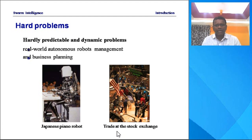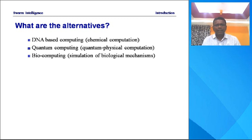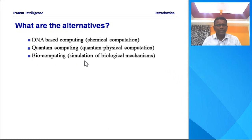Traditional systems cannot handle these hard problems easily and effectively. So we have some alternatives: DNA-based computing, quantum computing — which is widely used nowadays in every application — and bio-computing. Bio-computing is the simulation of biological mechanisms. Quantum computing is quantum physical computation, and DNA-based computing uses chemical computations. Our evolutionary system is inspired by nature — it is a bio-inspired technique.